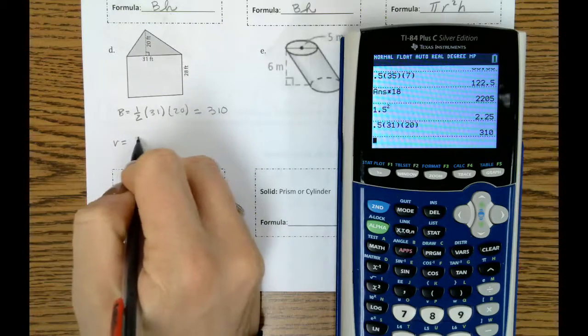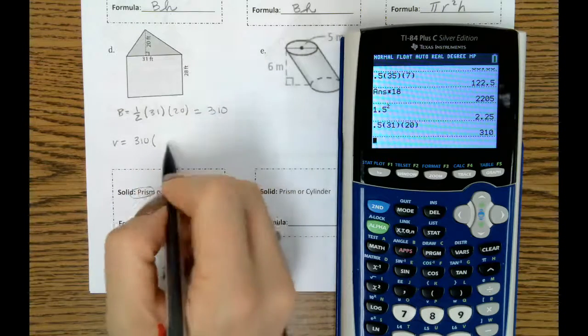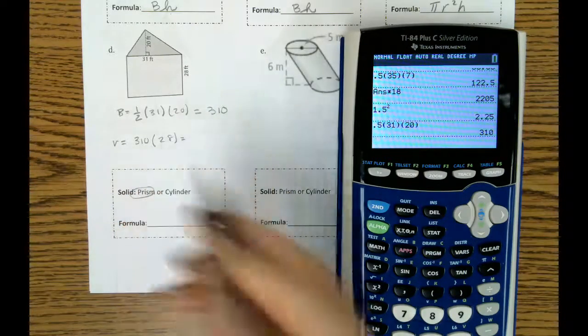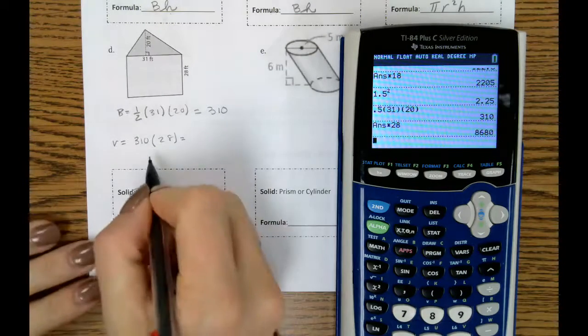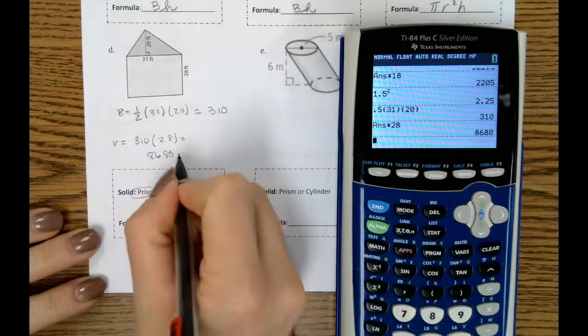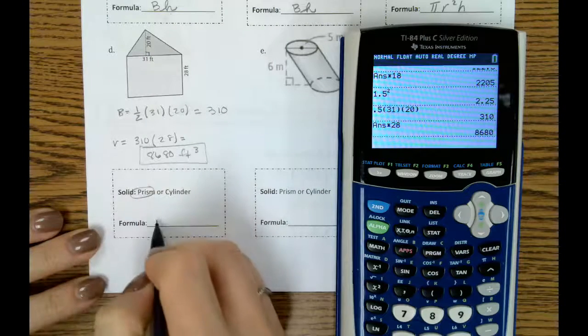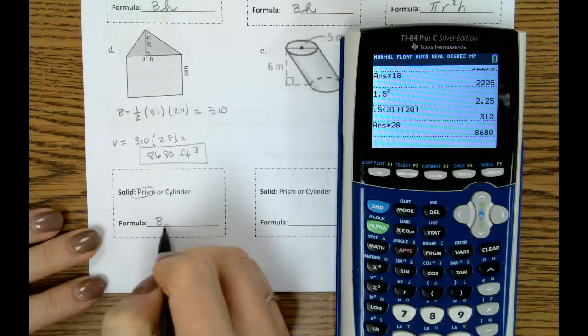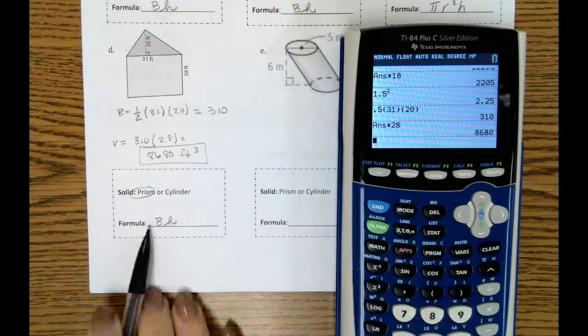Then for our volume, we'll do 310 times the height of our prism, which is 28. And that gets us a total of 8,680 cubic feet. And so again, we used base times height on this one, the area of our base times height.